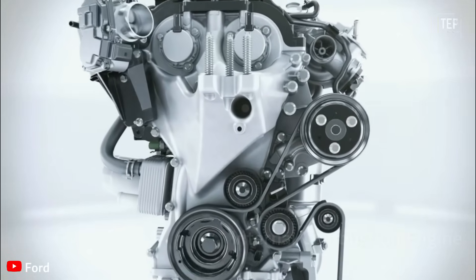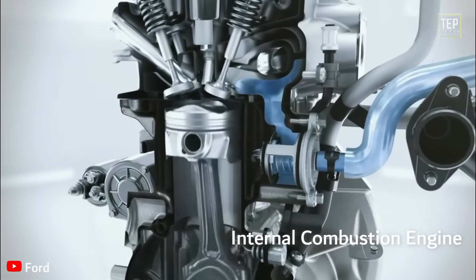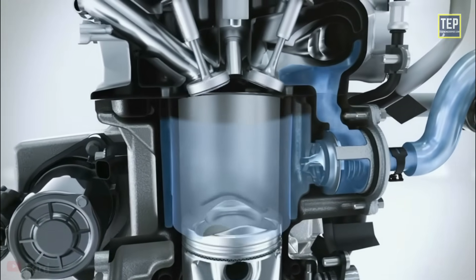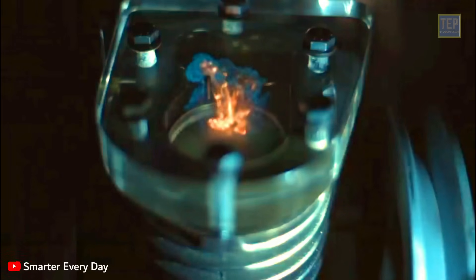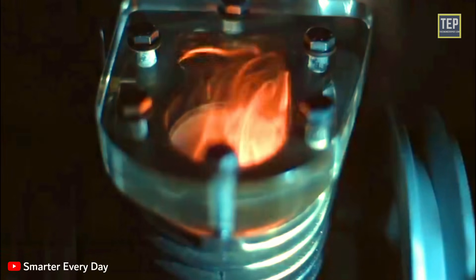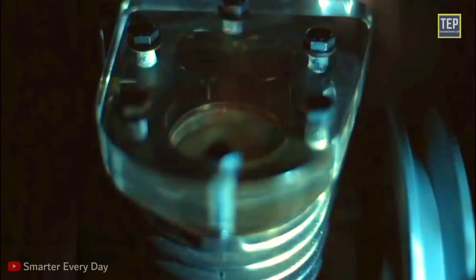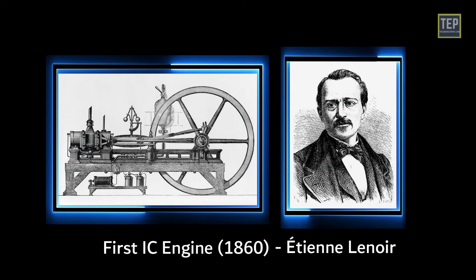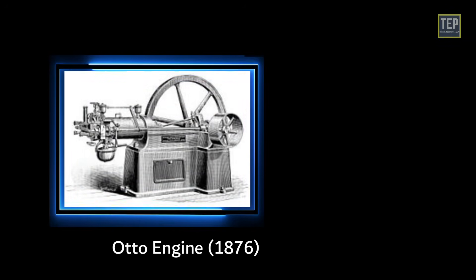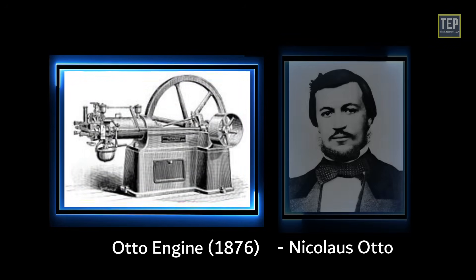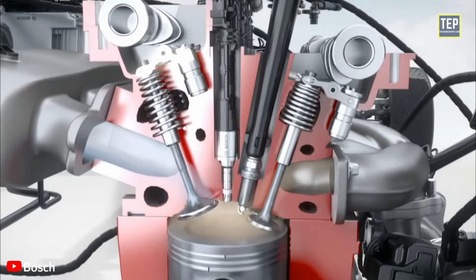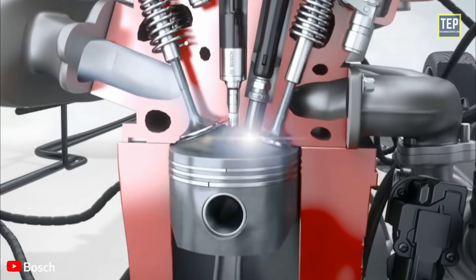IC engine is an acronym for internal combustion engine, in which ignition and combustion of fuel take place inside the engine. It works on the principle that the charge is ignited inside a combustion chamber under very high pressure. The first commercially successful IC engine was created by Etienne Lenoir around 1860, and the first modern IC engine, known as the Otto engine, was created in 1876 by Nicolas Otto.